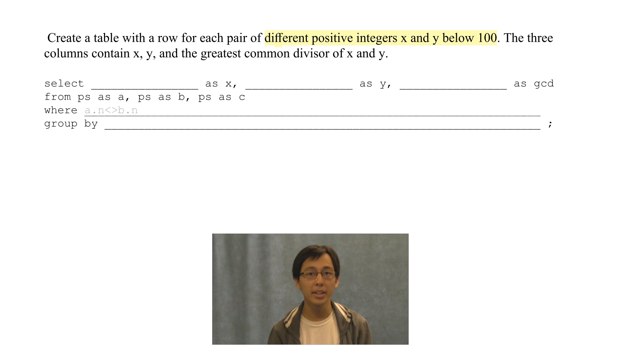For the conditions, a.n can't be b.n, c.n has to divide a.n, and c.n has to divide b.n.